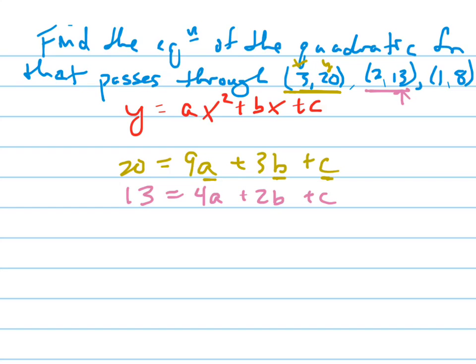And the final one is going to be 8 — that's your y — equals a plus b plus c. And now you'll see that you have three equations with three unknowns, so I can set up a matrix equation.